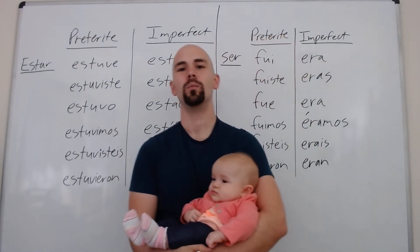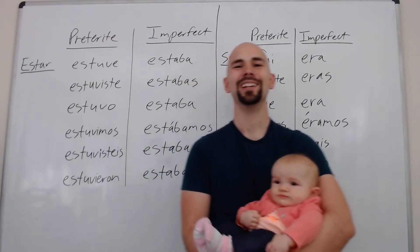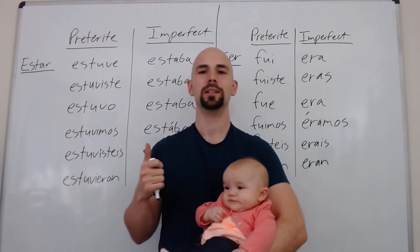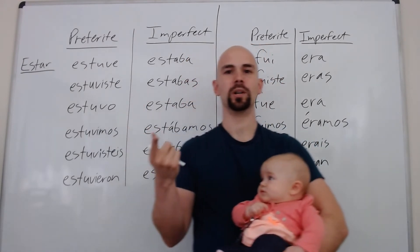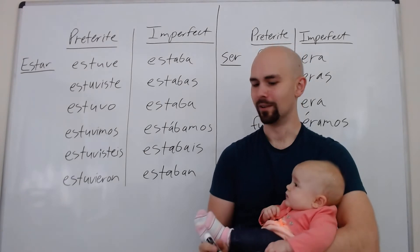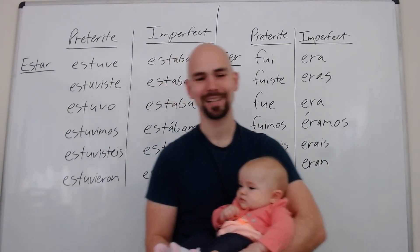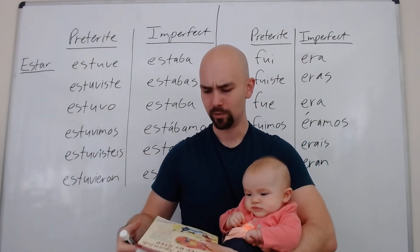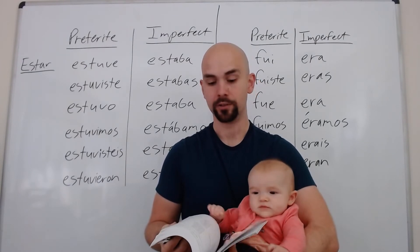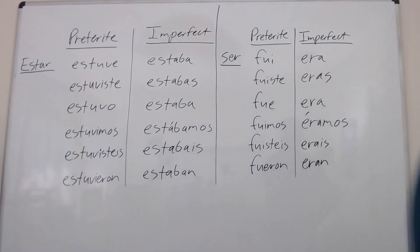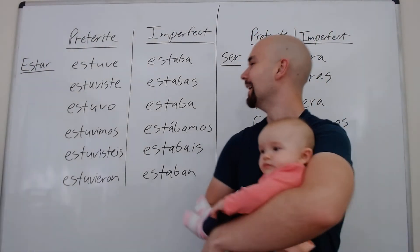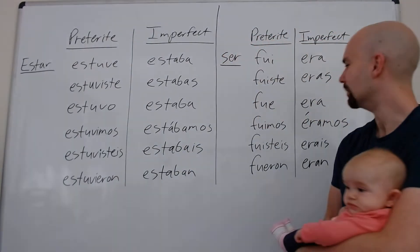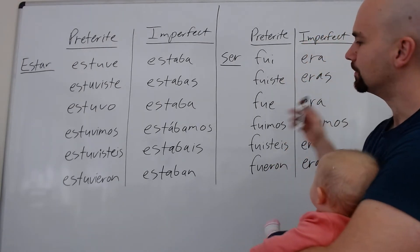When do we use ESTAR and when do we use SER? We use ESTAR for three temporary kinds of situations: one is location, another is changing mood or condition, and the third is health. SER is going to be used for all other forms of the being verb. In this case it's past, but all other uses of the being verbs are going to be SER.